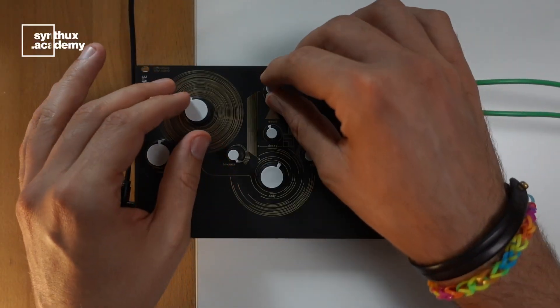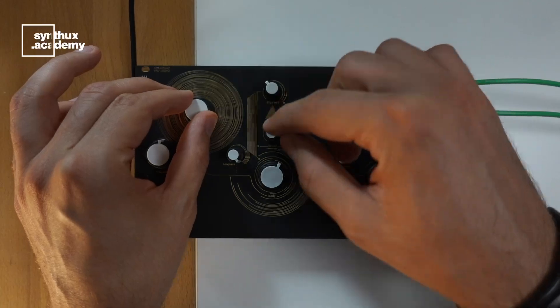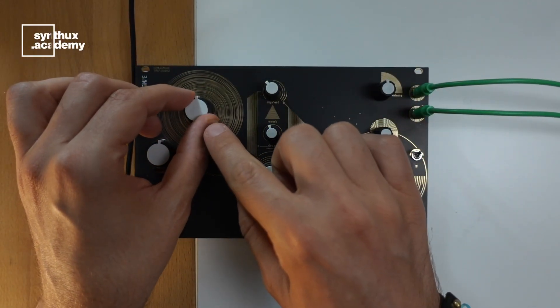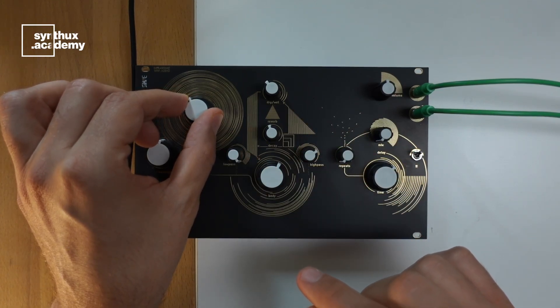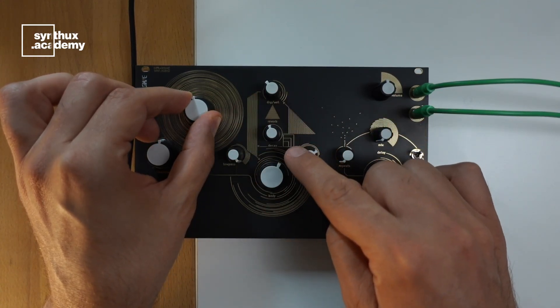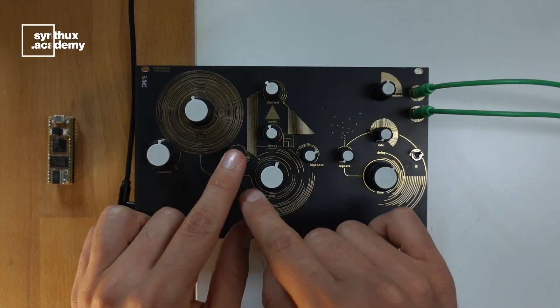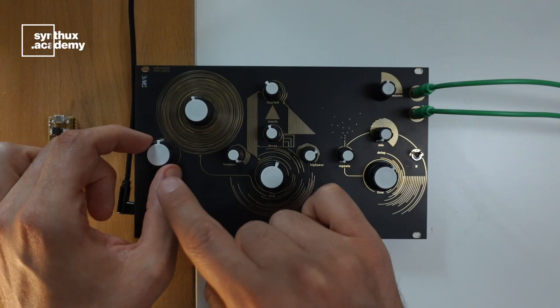This is a Feedback Synthesizer with reverb in the feedback loop. Karplus-Strong string, going into the reverb filter, low-pass, high-pass, and back to itself, so this is the pitch.